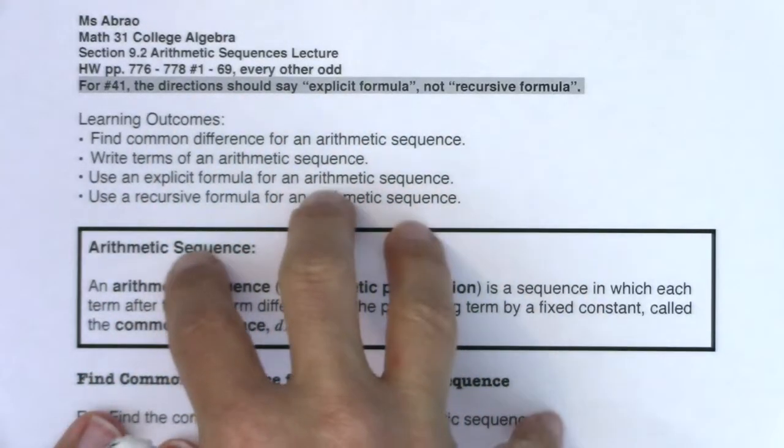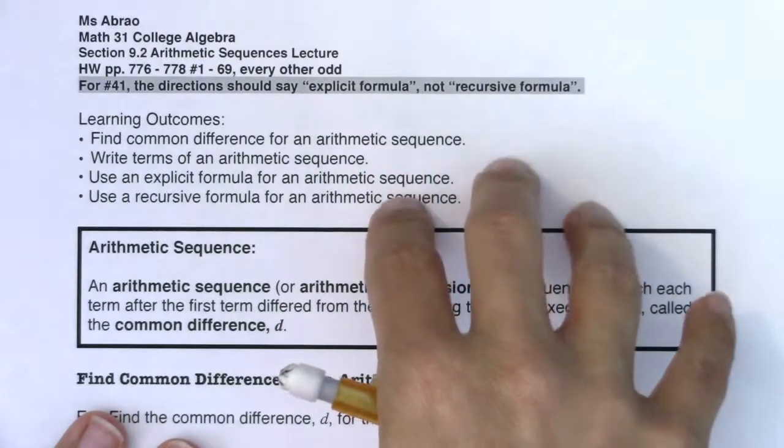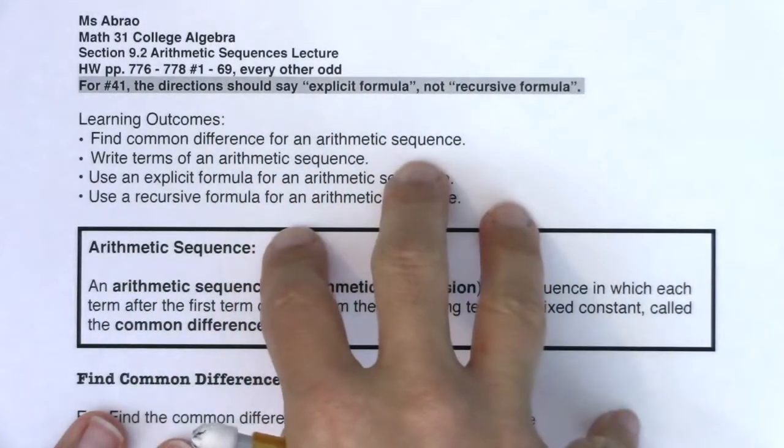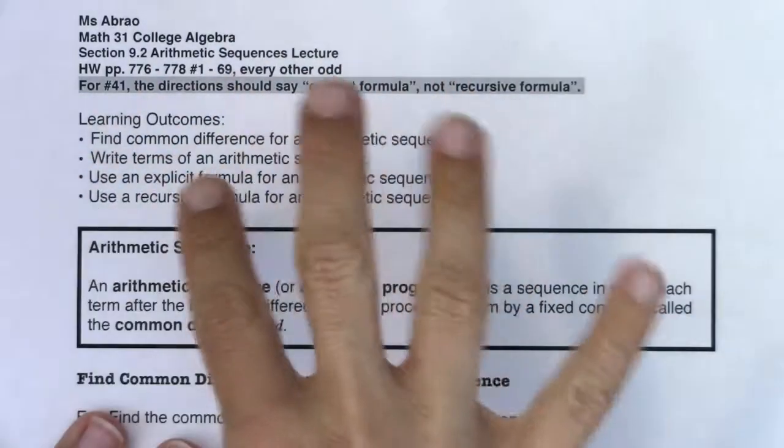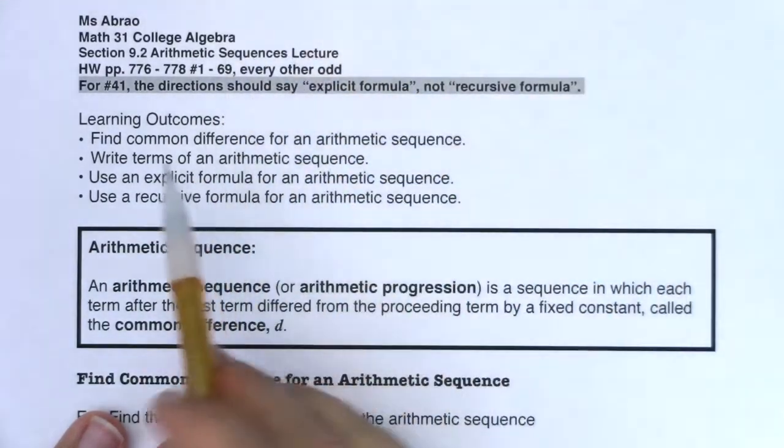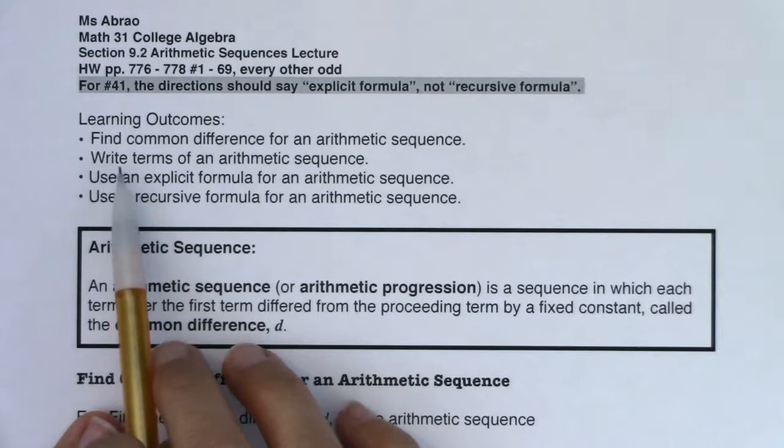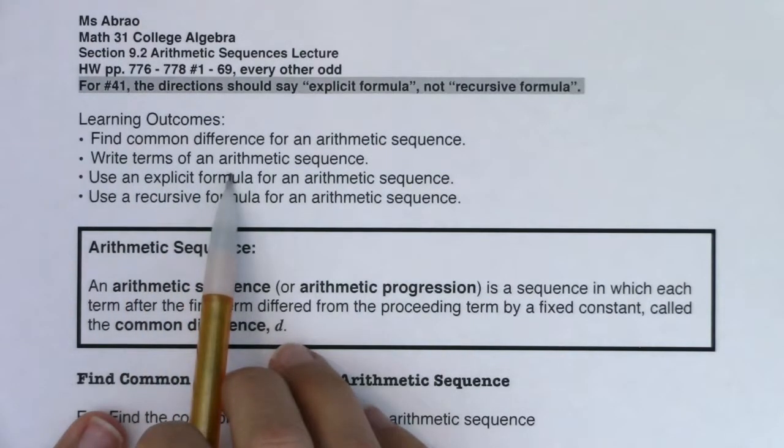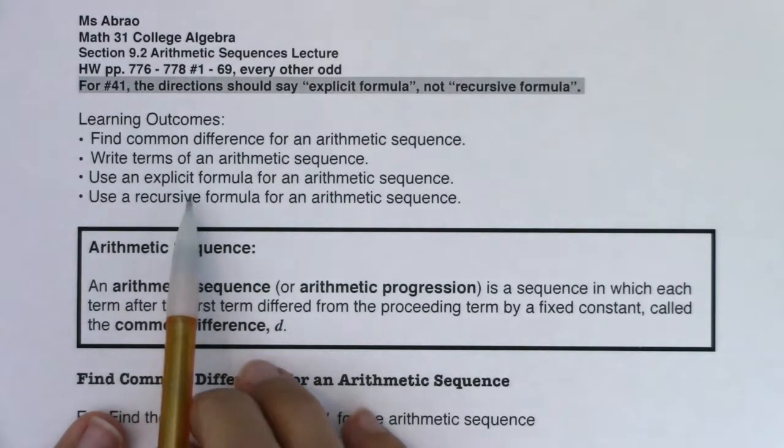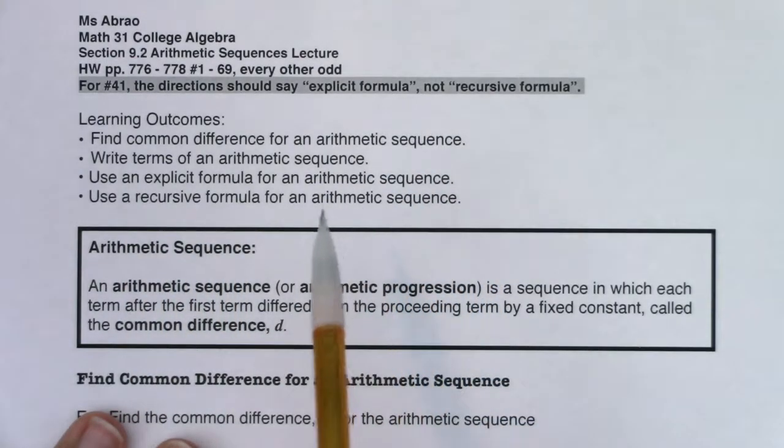We're going to explore all sorts of things about arithmetic sequences. And then when we get to 9.3, we're going to talk about something called a geometric sequence. Arithmetic and geometric are two main types of sequences that you look at in math. They're by no means the only sequences, but they are so common that that's why we usually look at them. By the end of this section, we should be able to find the common difference for an arithmetic sequence, write the terms of an arithmetic sequence, and use either explicit formulas for an arithmetic sequence or a recursive formula for arithmetic sequences.